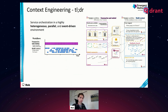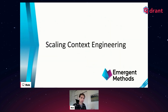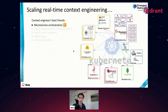Distributed deployment is huge because high availability is important, and deep storage — when you're in the business of news archival, which is one of our main missions — means an ever-growing database. You need a database that's going to be able to grow with you as your data grows. So what's the TLDR to this context engineering? It's really based on service orchestration in a very heterogeneous and parallel, event-driven environment.